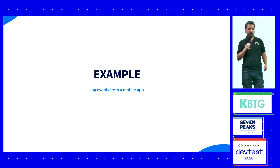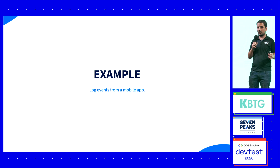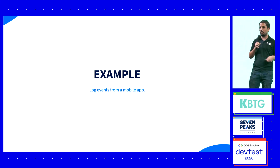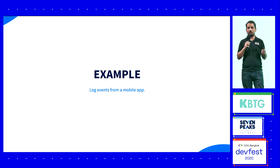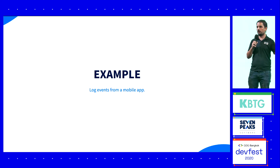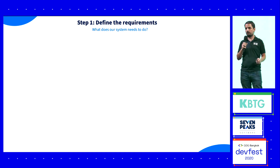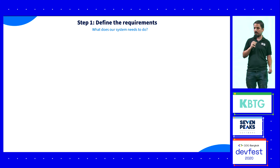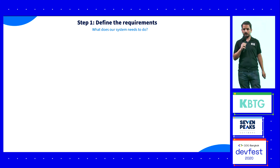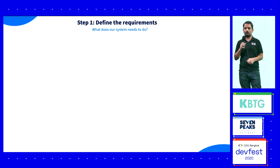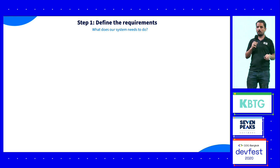Our example will be a log system. You want to log your events, and every time an event occurs on your app, you want the server to know about it. When you want to build a system design, the first thing you have to do is define the requirements — what features do we need, what is in scope and what is not in scope.